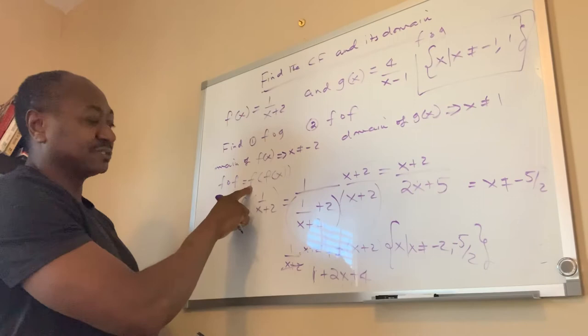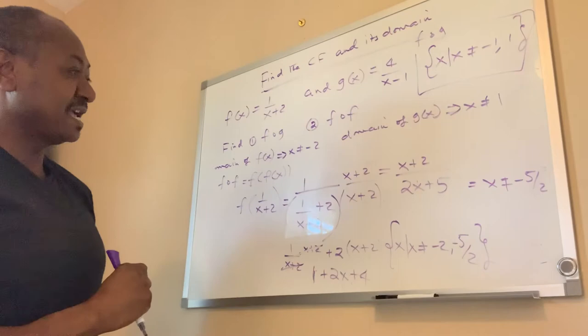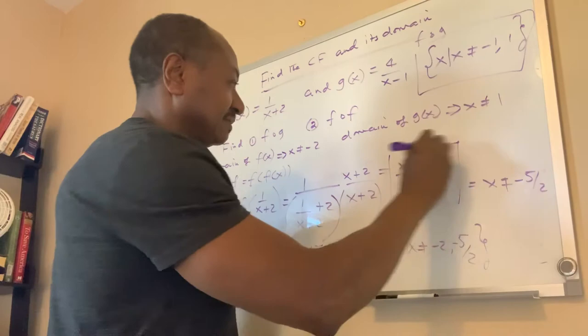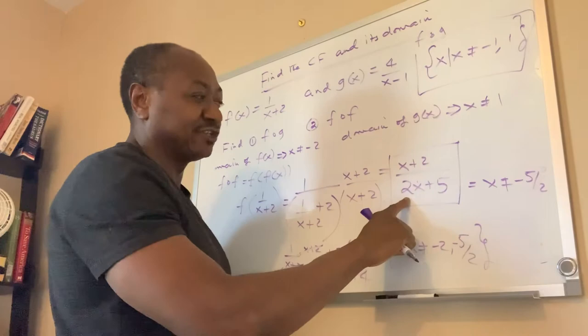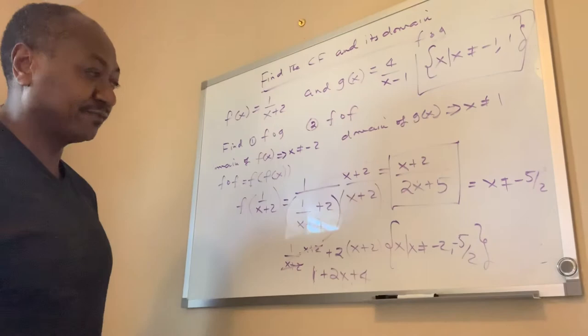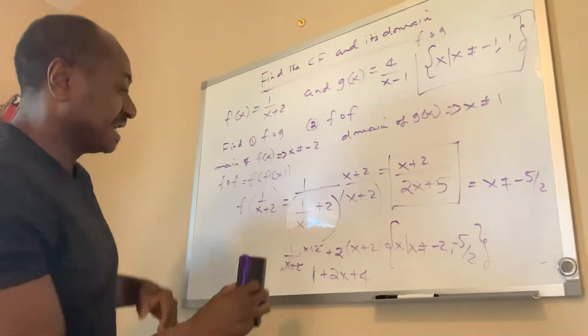So for f of f of x — f composed with itself — the domain of f of x is negative 2, we keep that, and then we solve the composite function. The denominator gives us negative 5 over 2, so the total domain is negative 2 and negative 5 over 2. In both cases, you find the composite function first and then find the domain.